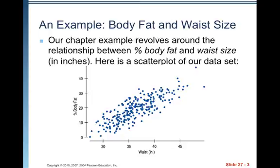Our chapter example revolves around the relationship between percent body fat and waist size in inches. Here's the scatter plot of our data set. You can see the waist size in inches is on the horizontal and percent body fat is on the vertical.